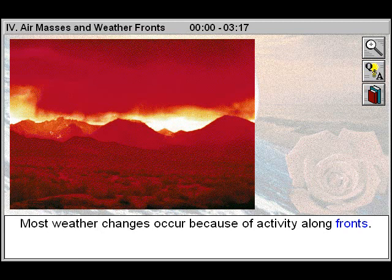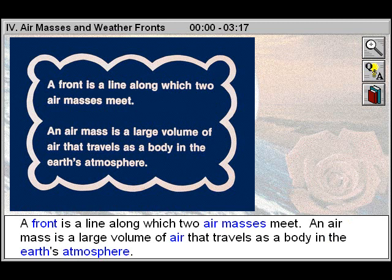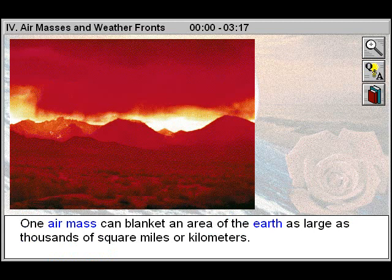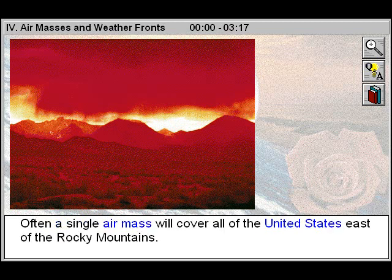Most weather changes occur because of activity along fronts. A front is a line along which two air masses meet. An air mass is a large volume of air that travels as a body in the Earth's atmosphere. One air mass can blanket an area of the Earth as large as thousands of square miles or kilometers.